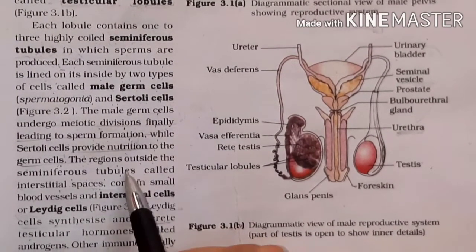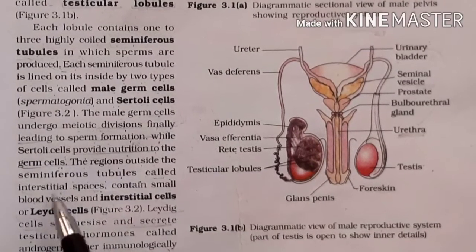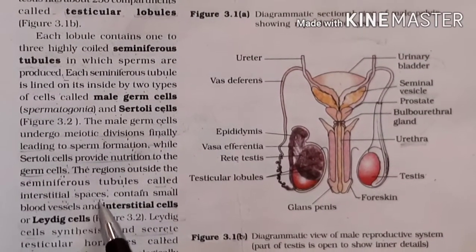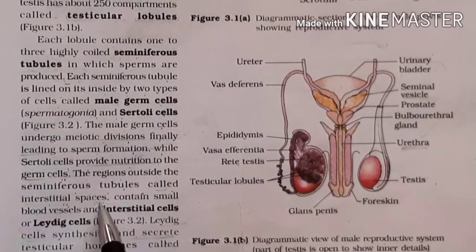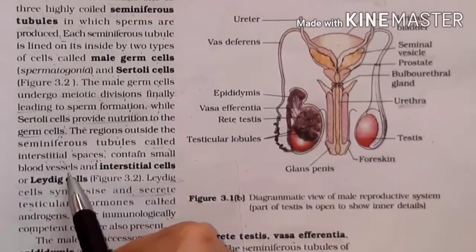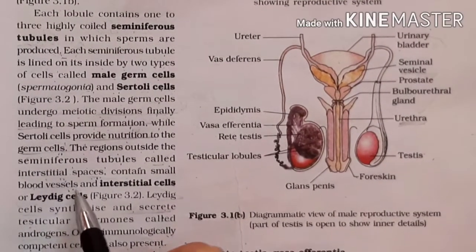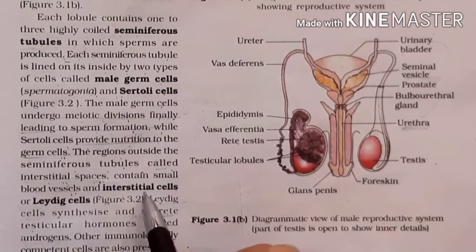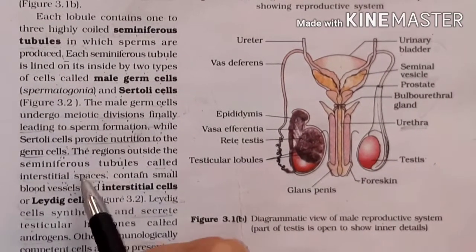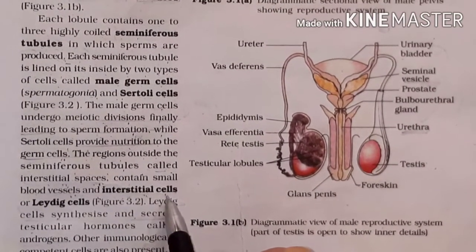Outside the seminiferous tubules there is a region called the interstitial space. This interstitial space contains small blood vessels and interstitial cells.